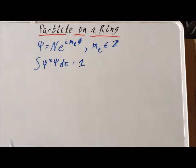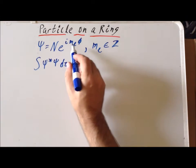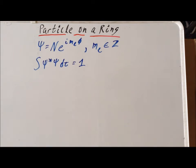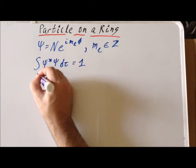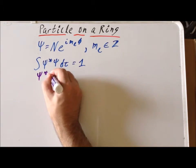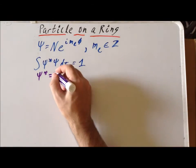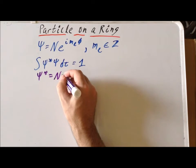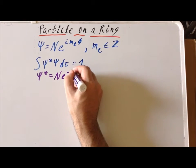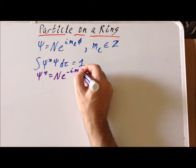Since we know that psi is equal to n e to the i m sub l phi, we also know that we can write psi star, the complex conjugate. We simply replace i by minus i everywhere it appears, so that gives us n times e to the minus i m sub l phi.